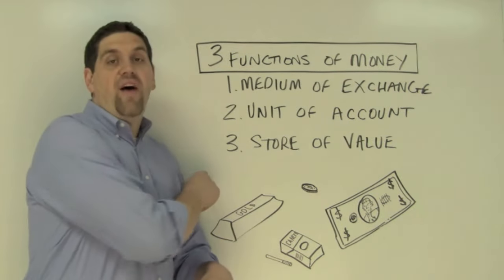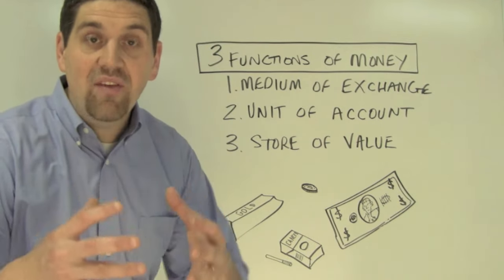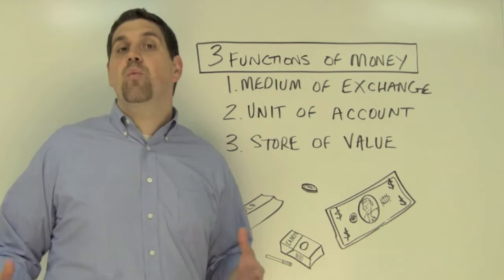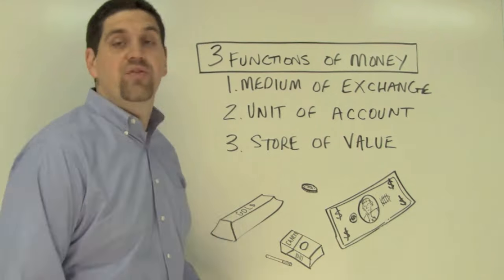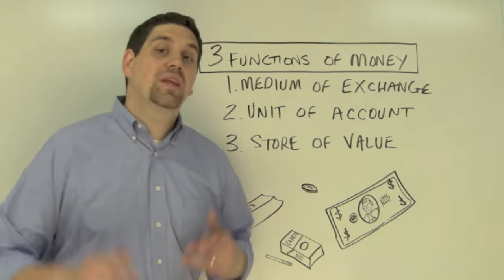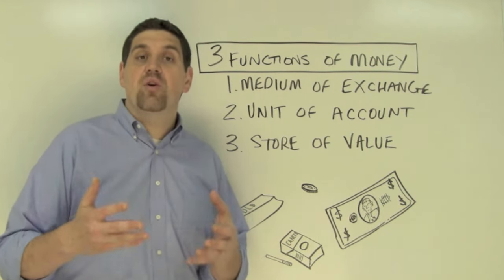The last function is the idea of a store of value. Money allows you to save and store the value of your work and effort. So if you did some work for someone and you got paid in meals, there's no way to actually store that value. But getting paid money allows you to store that value to buy something in the future.